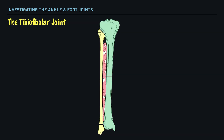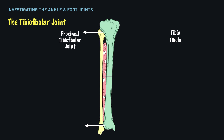The first joint we'll look at is the tibiofibular joint, which is the articulation between the tibia and fibula, joined together at both the proximal and distal ends, making them the proximal and distal tibiofibular joints. These joints are joined by an interosseous membrane that provides added support. It's at the distal tibiofibular joint that high ankle sprains occur. These joints are classified as syndesmosis joints.